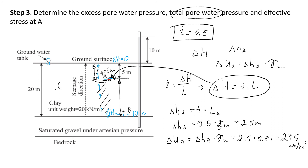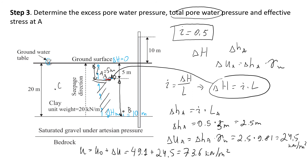Now we can find the total pore pressure, which is the hydrostatic pore pressure plus the additional pore pressure at point A: u_total = 49.1 + 24.5 = 73.6 kN/m². Finally, the effective stress is total stress minus pore pressure: σ' = 100 − 73.6 = 26.4 kN/m². This is the answer for this problem.